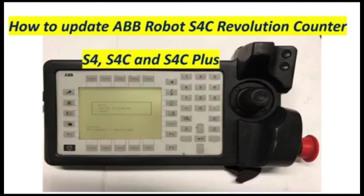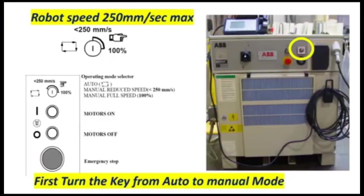Our next topic is how to update the ABB robot S4C revolution counter. This is also applicable to S4, S4C, and S4C Plus. On manual mode, the robot speed is 250 mm per second maximum.